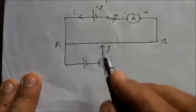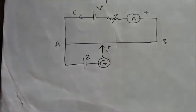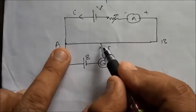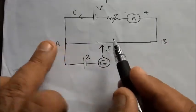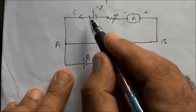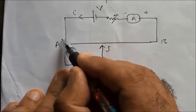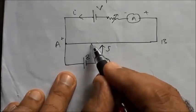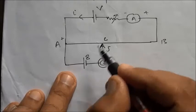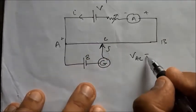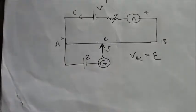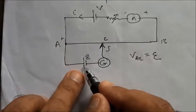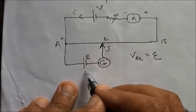Now let us see what happens in the circuit. Let the EMF of the cell be E. The potential between any two points varies as we move along the wire — the more the length, the more the potential. Current enters at the positive terminal, so this end is positive and potential decreases along the wire. At a certain length, say point C, the potential between those two points equals the EMF of the cell.